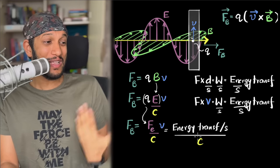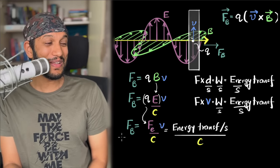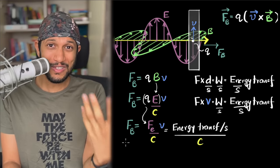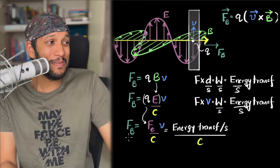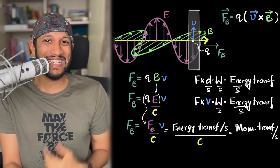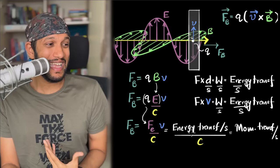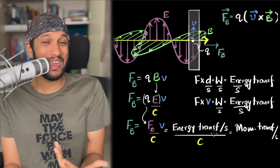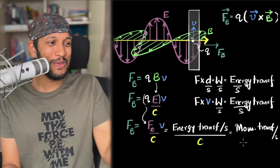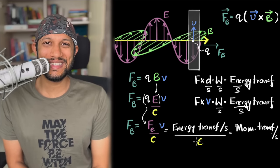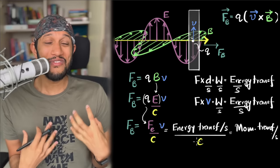Now, force is the rate of change of momentum — momentum transferred per second. So what we've derived is: the momentum that light transfers per second equals the energy it transfers per second divided by c, the speed of light. Cancel out the seconds and you get p = E/c. Boom — there we go. Feynman has delivered.